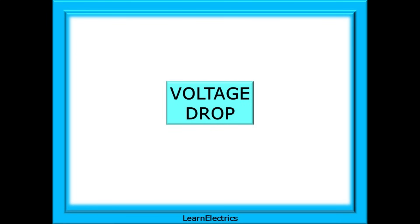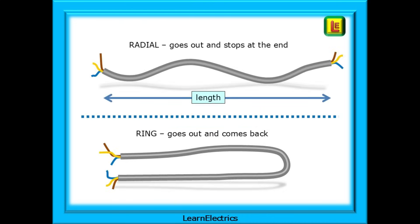What about voltage drop? It's vitally important that the circuit length and circuit load are not so great that insufficient voltage is present at the points of use, causing equipment not to function correctly. A radial circuit cable leaves the consumer unit and goes out to the various points of use and then stops at the end — at the last socket. A ring circuit cable leaves the consumer unit, visits each of the points of use, and the cable then returns to the consumer unit, forming a ring around the premises. Which type of circuit it is will affect the voltage drop and, ultimately, the length of circuit that can be safely installed.